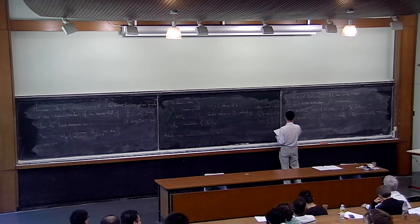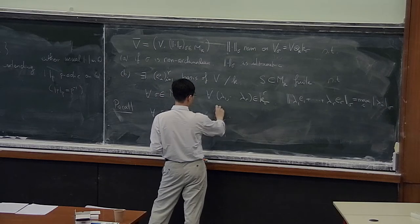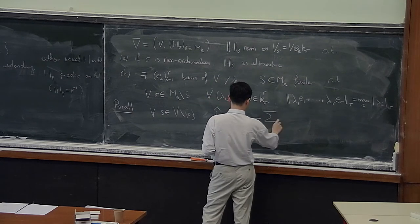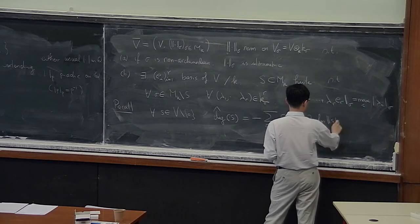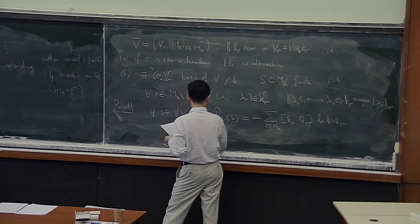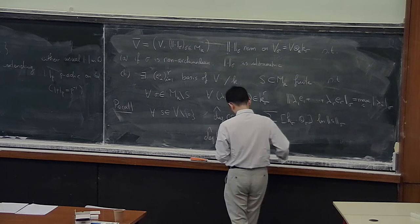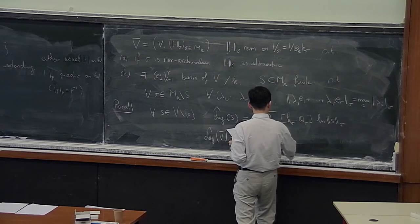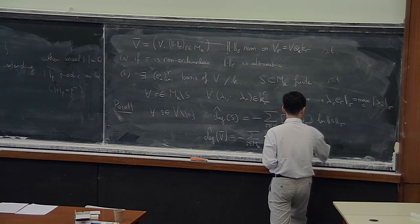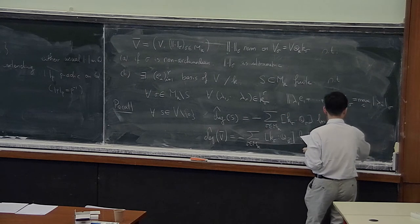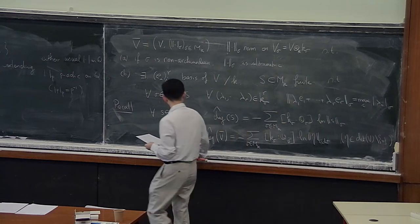Je vous rappelle quelques variantes introduites par Éric dans son cours. Pour s dans V privé de 0, on donne la variation logarithmique de hauteur, qu'on note deg(s), définie comme moins la somme sur σ ∈ M_K de [K_σ : Q_σ] · log ||s||_σ. Et vous pouvez définir le degré chapeau d̂eg(V̄) par une formule très similaire, remplaçant log ||s||_σ par log ||η||_{σ,det}, où η est un élément non nul du déterminant de V. Par la formule du produit, cela ne dépend pas du choix de η.